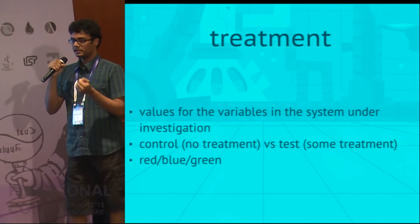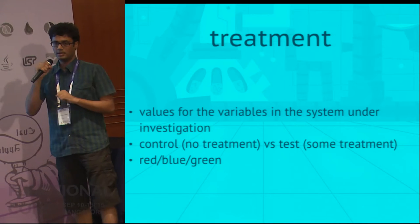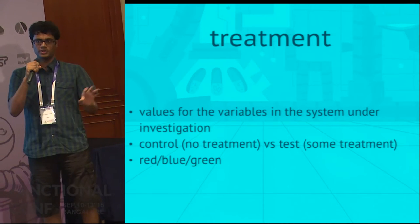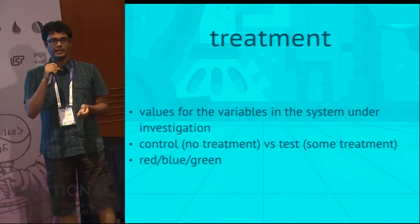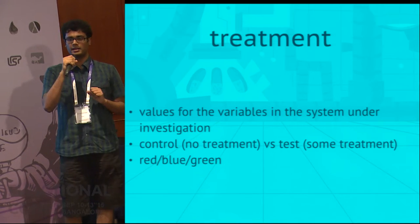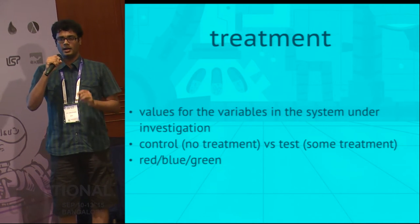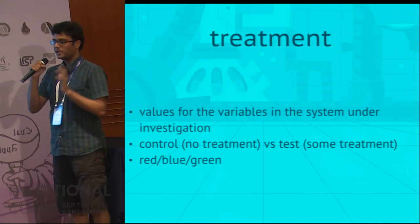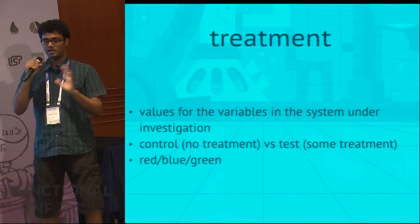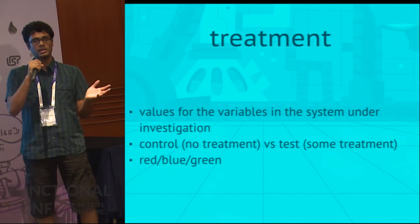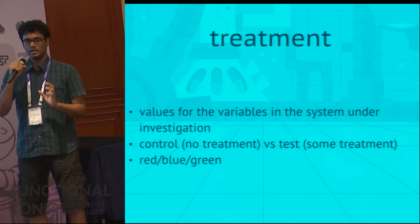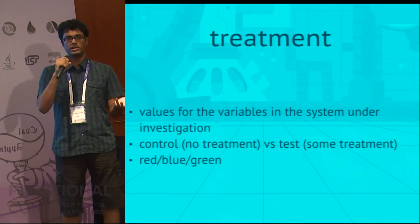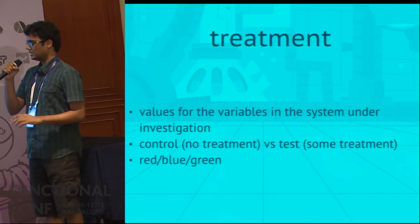Another keyword we'd use a lot is treatment, which we colloquially refer to as a bucket, and we'll use these interchangeably throughout the talk. Treatment is basically the value for a variable in your system. In the red-blue experiment, the color is the variable and the values red or blue would be the treatment. Typically, an experiment has a control treatment and a test treatment — control is effectively no treatment and test is your hypothesis. There's no need to restrict your experiment to only two treatments; you can have as many as you want — say red, blue, green.